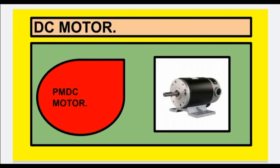This is the pictorial representation of a PMDC motor, that is, a Permanent Magnet DC motor. In this motor, a permanent magnet is used for getting the field, which is why it is called a Permanent Magnet DC motor.